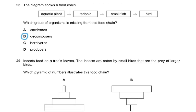Question 28. The diagram shows a food chain: aquatic plant, tadpole, small fish, bird. Which group of organism is missing from this food chain? Is it a carnivore? No, we've got a carnivore here. A herbivore? Yes, we've got a herbivore here. Producer? Yes, we've got a producer here. So the only thing missing was a decomposer and that was the answer to it.